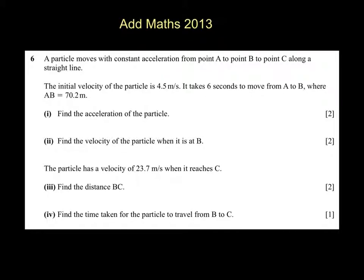2013, paper 2, question 6. A to B is 70.2 metres. At A, the velocity is 4.5 and at B, T is 6.